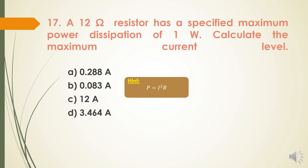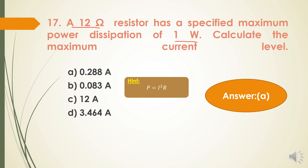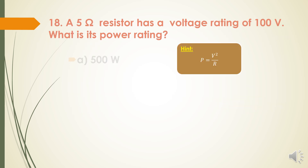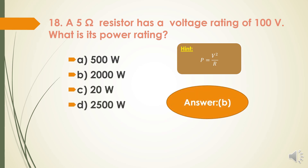Next question: A 12 Ω resistor has a specified maximum power dissipation of 1 watt. Calculate the maximum current. Using the formula P = I²R, substituting the values, the answer is option A — 0.288 ampere. Next question: A 5 Ω resistor has a voltage rating of 100 volts. What is its power rating? Using P = V²/R, the answer is option B — 2000 watts.